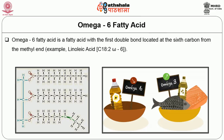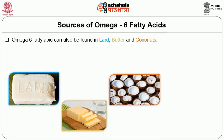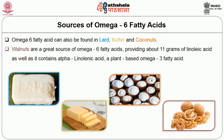Omega 6 fatty acid is one with the first double bond located at the sixth carbon from the methyl end; the example is linoleic acid. Omega 6 fatty acids are found in abundance in many commonly eaten foods such as canola, sunflower, corn, olive, soybean, and peanut oils. They are also found in lard, butter, and coconut. Walnuts are a great source, providing about 11 grams of linoleic acid as well as alpha-linolenic acid, a plant-based omega 3 fatty acid.